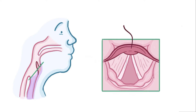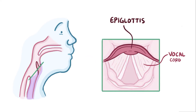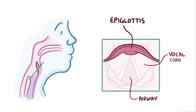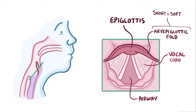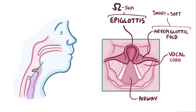Normally the epiglottis, which is a flap of cartilage just above the vocal cords, makes a firm arc over the airway. This is connected to the larynx by cartilaginous structures called ari-epiglottic folds. In children born with laryngomalacia, the ari-epiglottic folds are shorter than normal, so they end up pulling the normally arc-shaped epiglottis down into a distinctive omega shape.